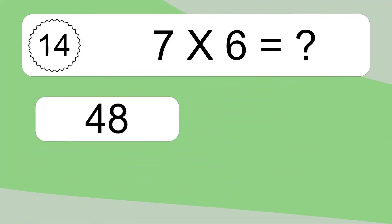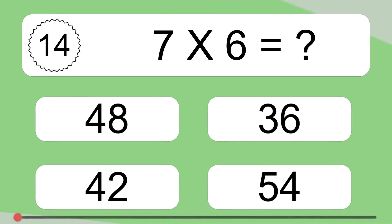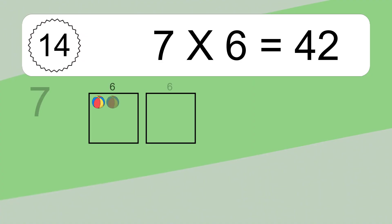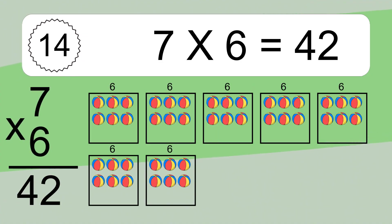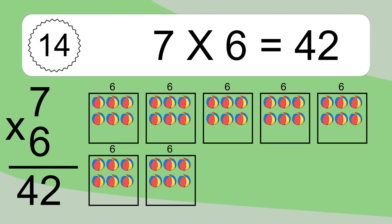Seven times six equals what? Seven times six equals 42. We have seven boxes, and each box has six colorful balls inside. If you count all the balls in all the boxes together, you will have seven times six balls. This equals 42 balls.